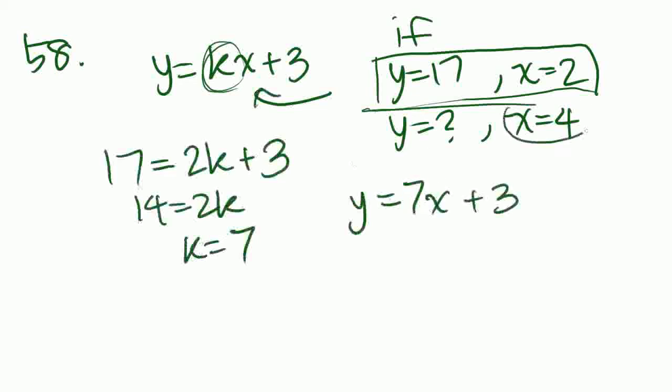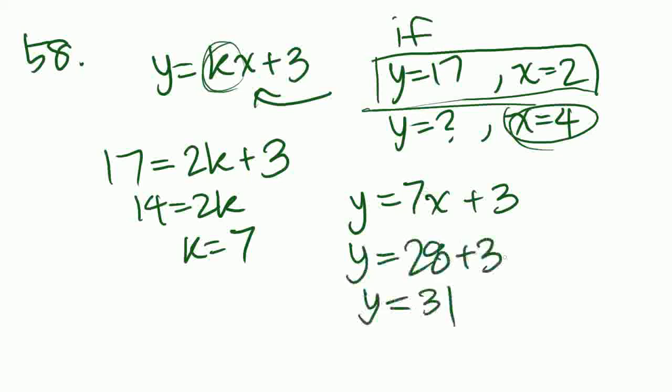They give us x here. So let's solve for y. 4 times 7, 28, plus 3. y equals 31. And let's see if 31 is the correct answer. Yes, it is the correct answer. That is answer choice B. Thank you.